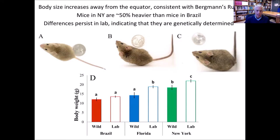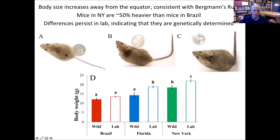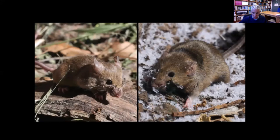What are some of those phenotypic differences? If we compare mice from Brazil — near the equator — with mice from Florida or from New York at about 45 degrees north latitude, and measure body weight in wild animals, mice from higher latitudes are substantially larger than mice from lower latitudes. The mice from New York are about 50% bigger than those from Brazil. If you bring them into the lab and keep them for several generations, they get bigger with unlimited food, showing some plasticity, but the differences between populations persist, indicating they are genetically determined.